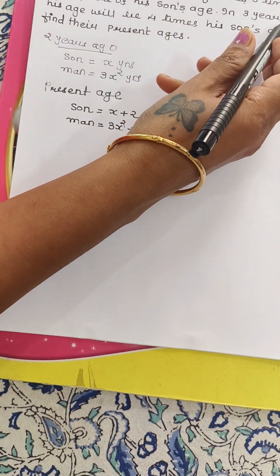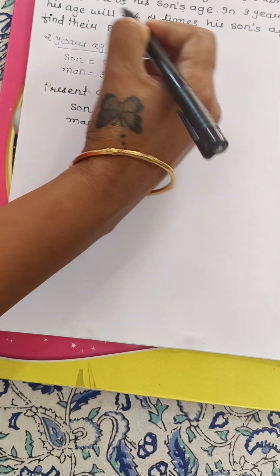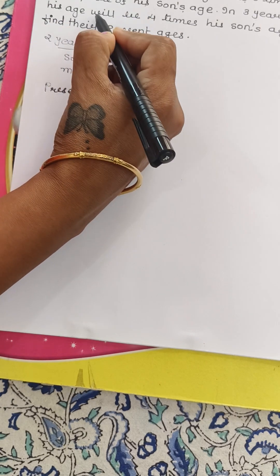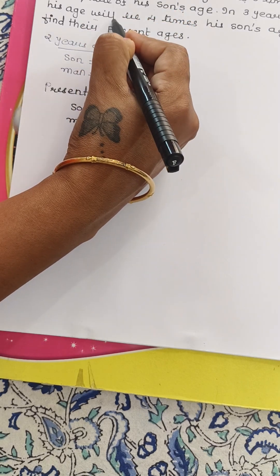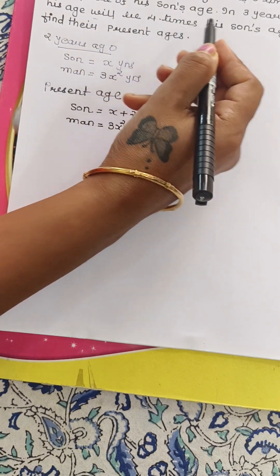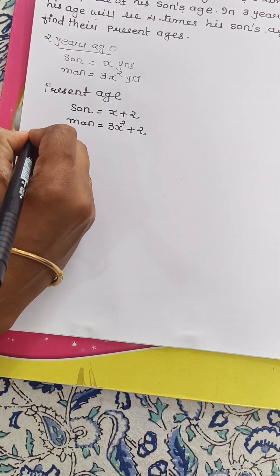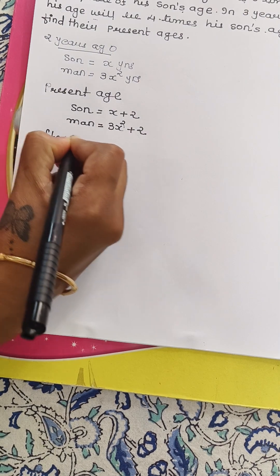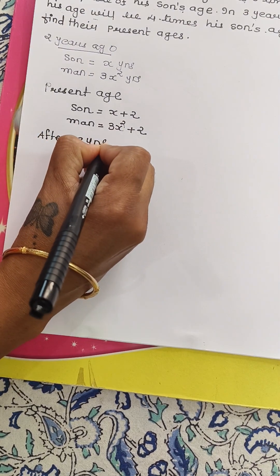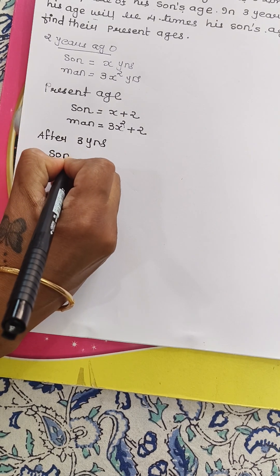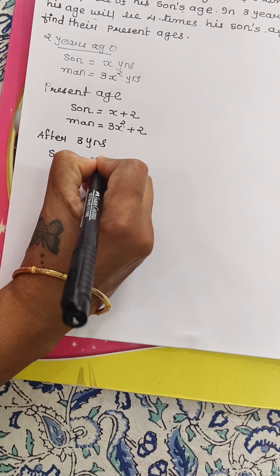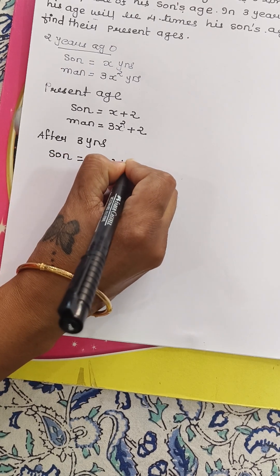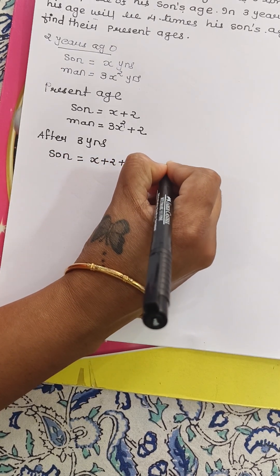In three years time, his age will be 4 times his son's age. So after three years, son's age will be X plus 2 plus 3, that is X plus 5 years.